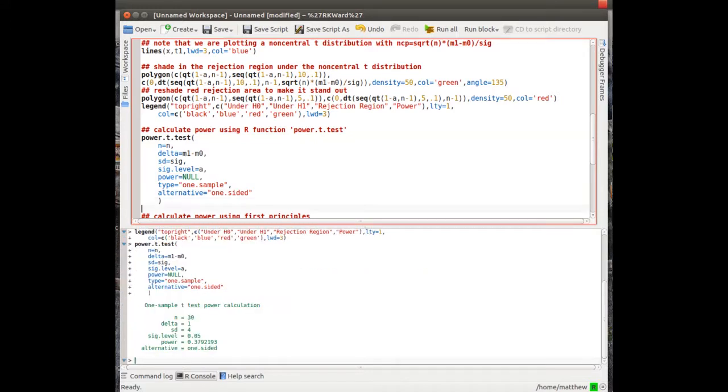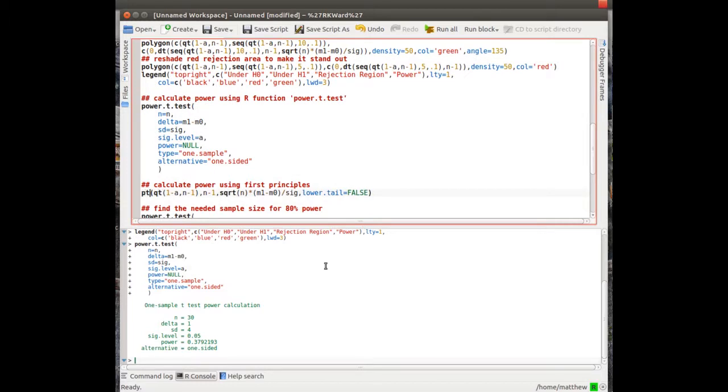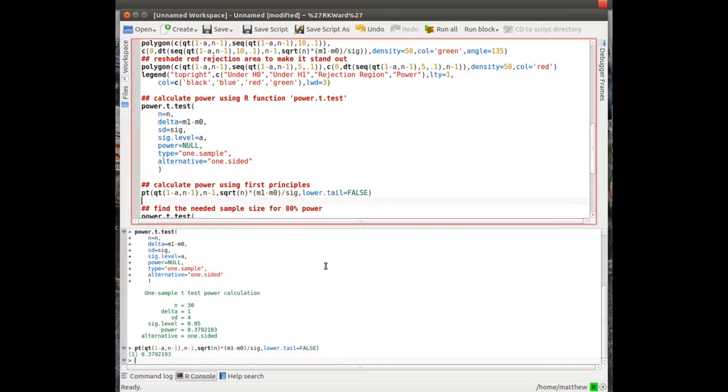To calculate power, it is 37.9% power, which is not a lot. Now to do this from first principles is one function. pt is the distribution function, and we calculate it from the critical value, n-1 degrees of freedom, with this non-centrality parameter, and we want the right tail. The area under that curve is exactly the same as the power.